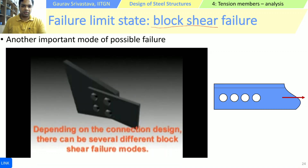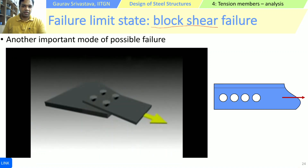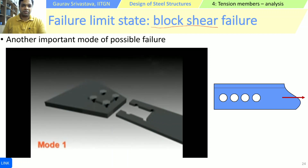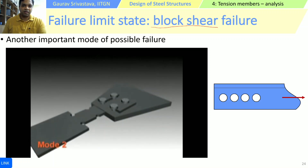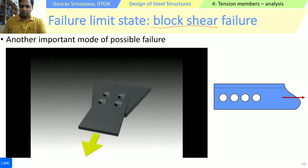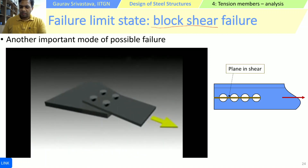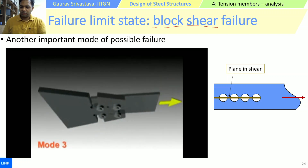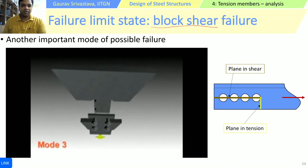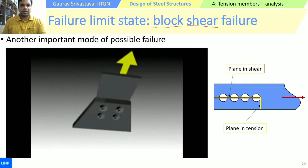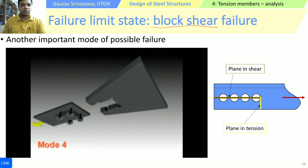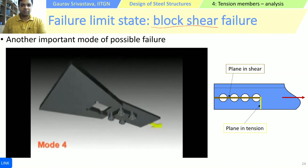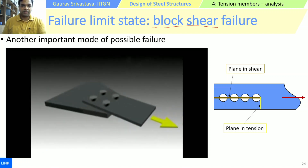Typically this is how members are connected to a gusset plate and when you apply a force it can fail in that manner. An entire section can remain with the bolts and the other entire section can actually just move out. If you look at what is happening, there is one plane which is in shear and there is one plane which is in tension.